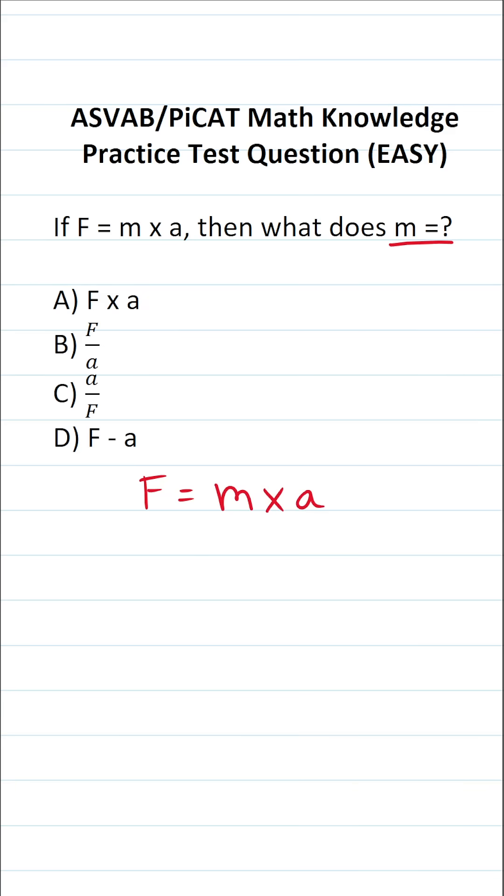In this case, we want to solve this literal equation, which is Newton's second law, for M. And in order to do that, we have to get rid of A.